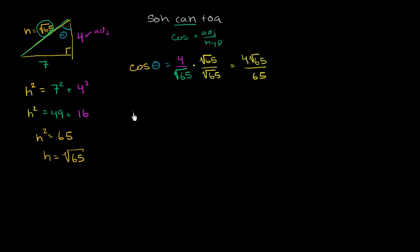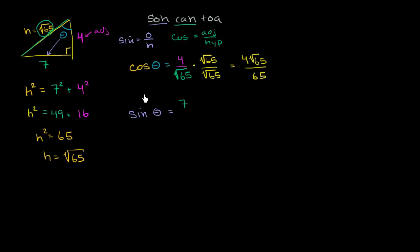Now let's do the other core trig functions — we'll learn there are more, but they're all derived from these. For the sine of theta, SOHCAHTOA tells us sine is opposite over hypotenuse. For this angle, the opposite side is 7 — it's what the angle opens into. The hypotenuse is the square root of 65. So sine of theta equals 7 over the square root of 65.